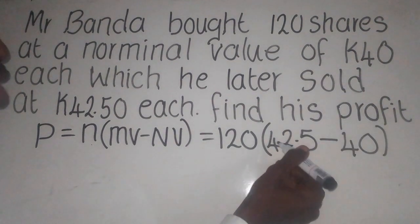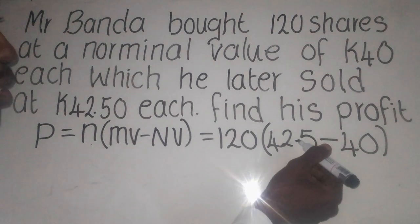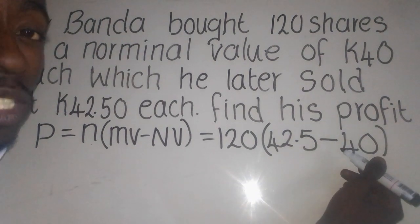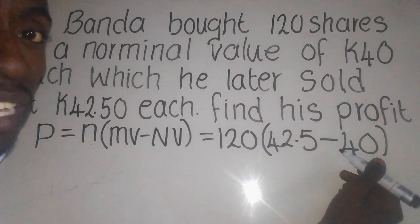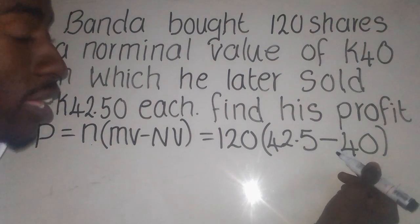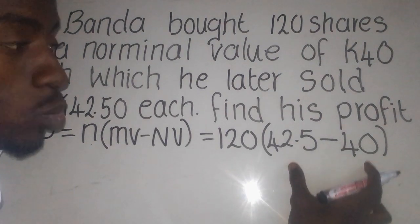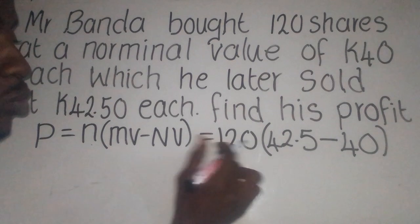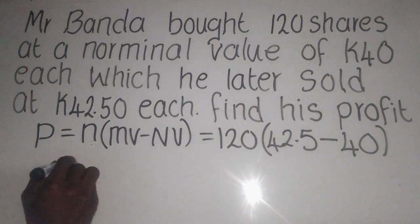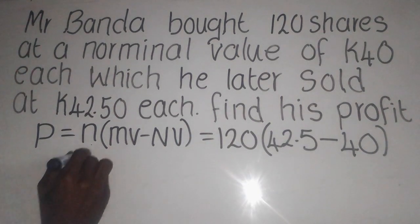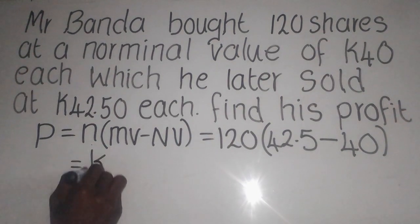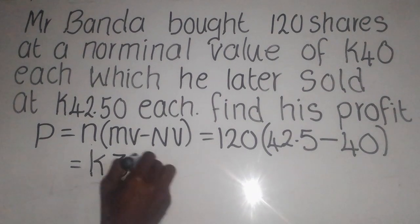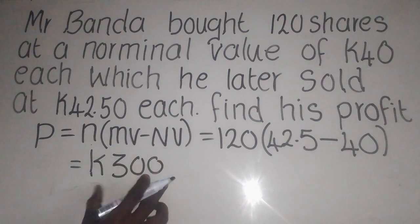42.5 minus 40 quarter gives us 2 quarter 15 way, meaning 2.5. That 2.5 multiplied by 120 gives us 300, which is the answer — the profit is 300.